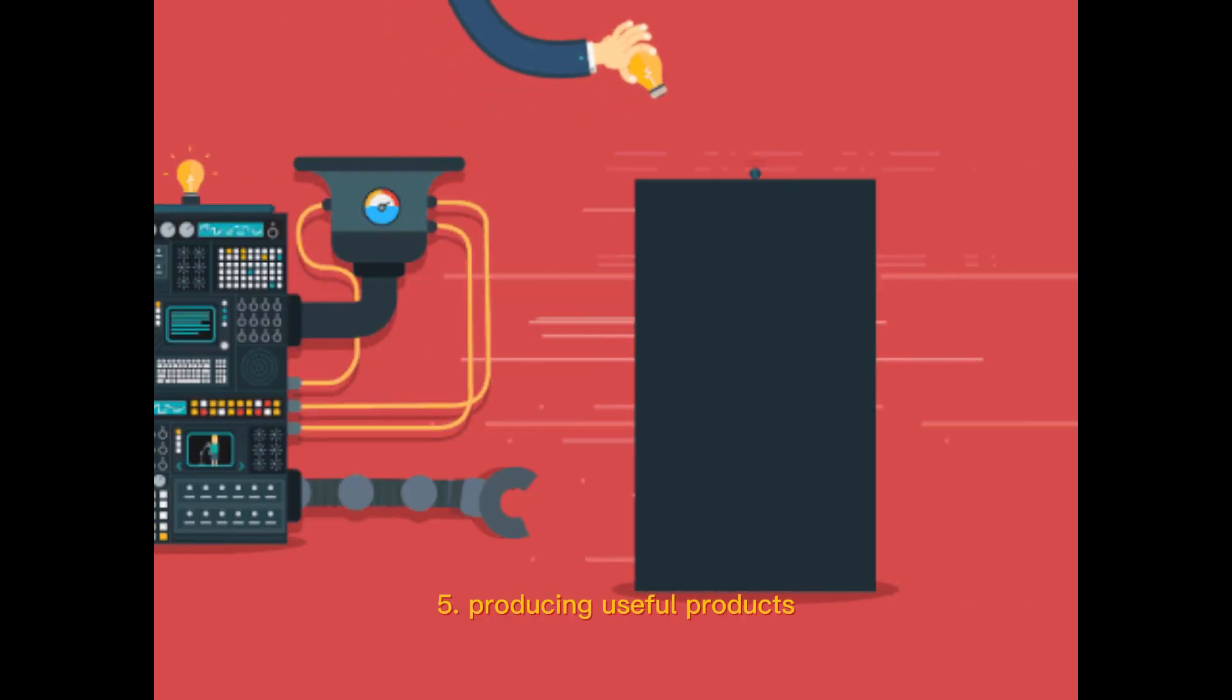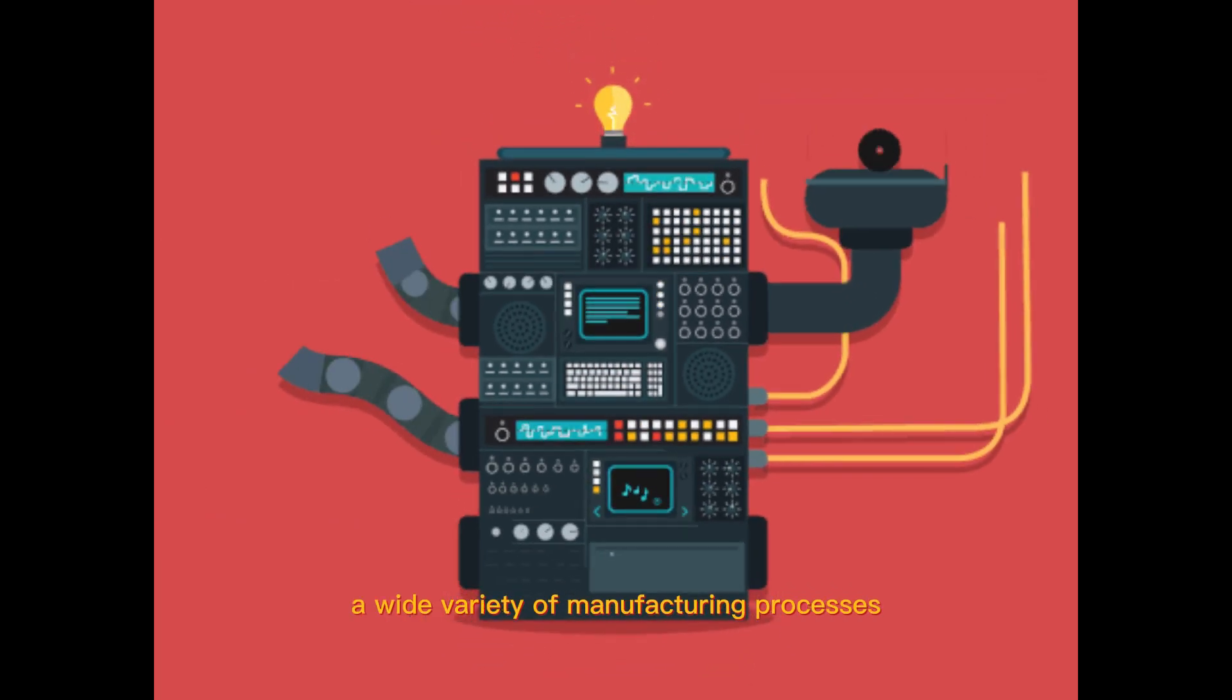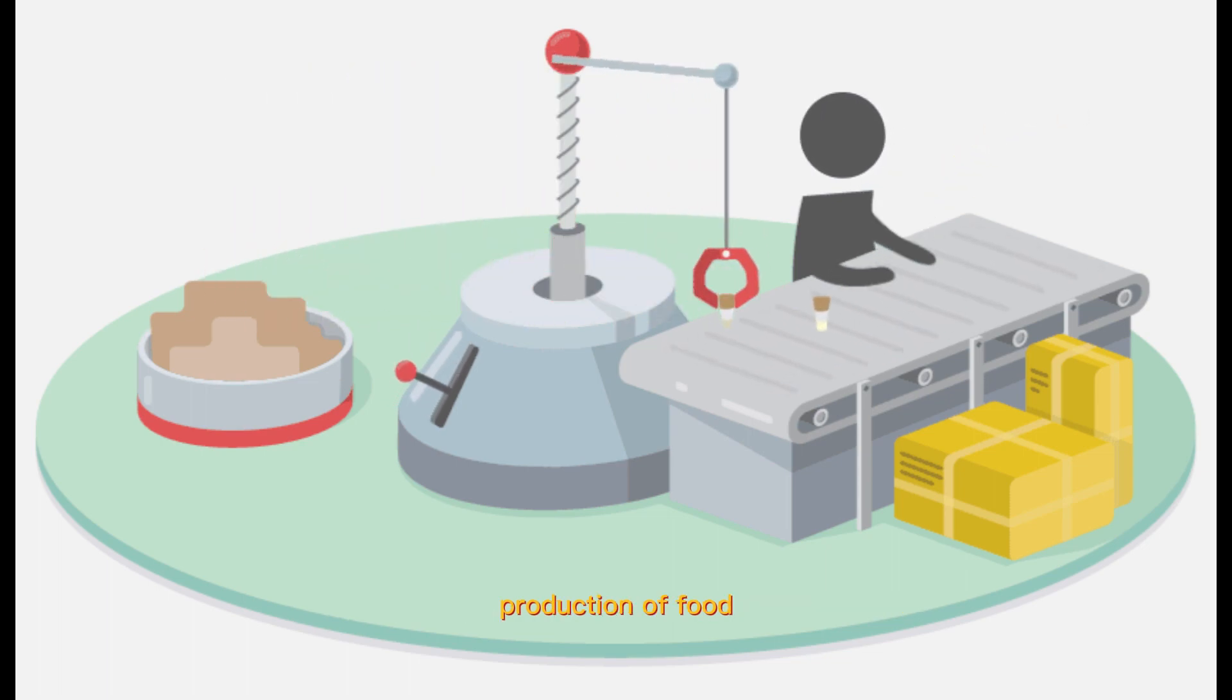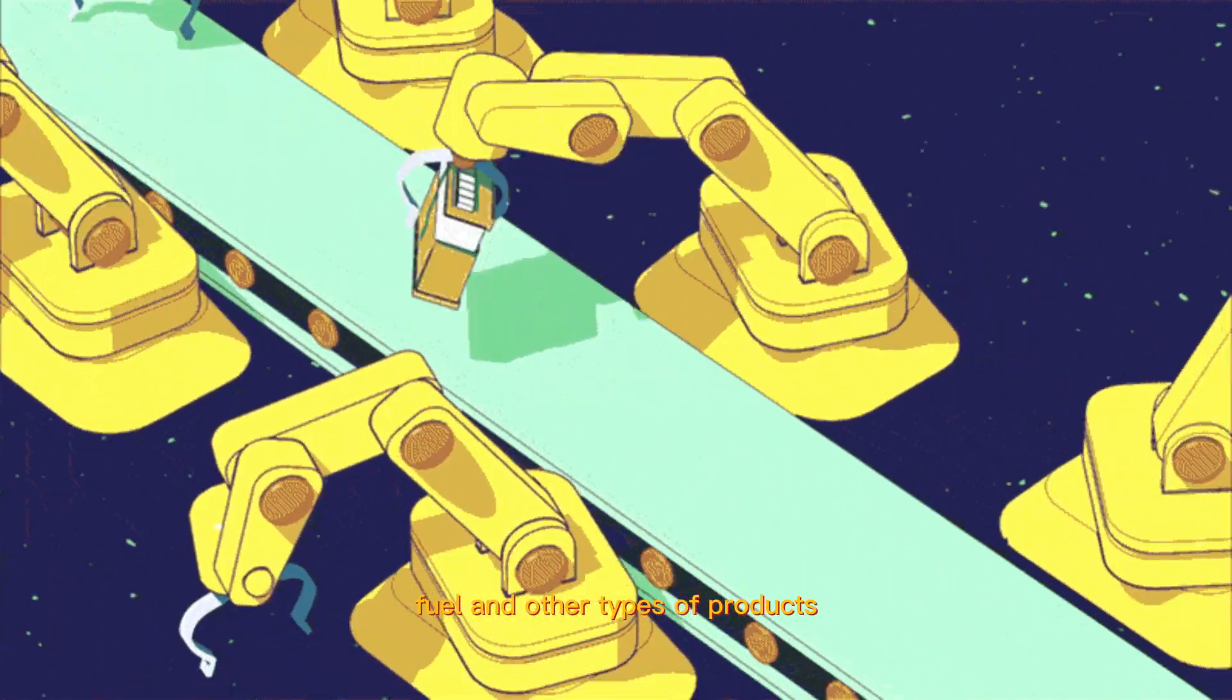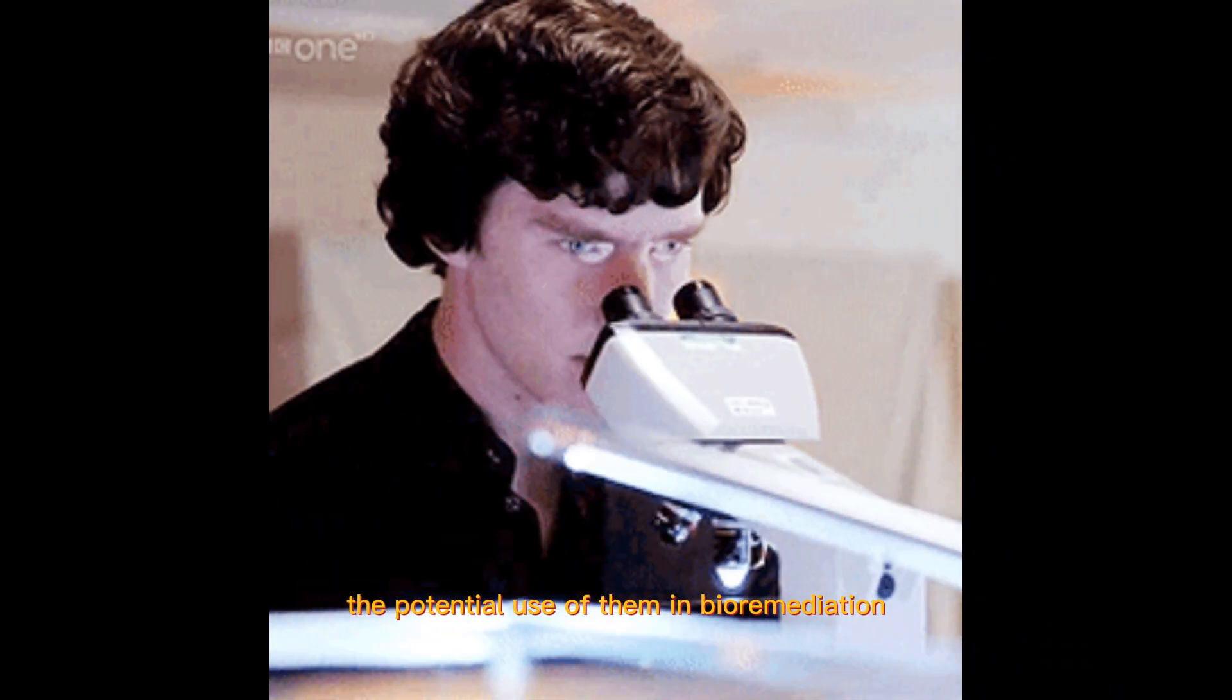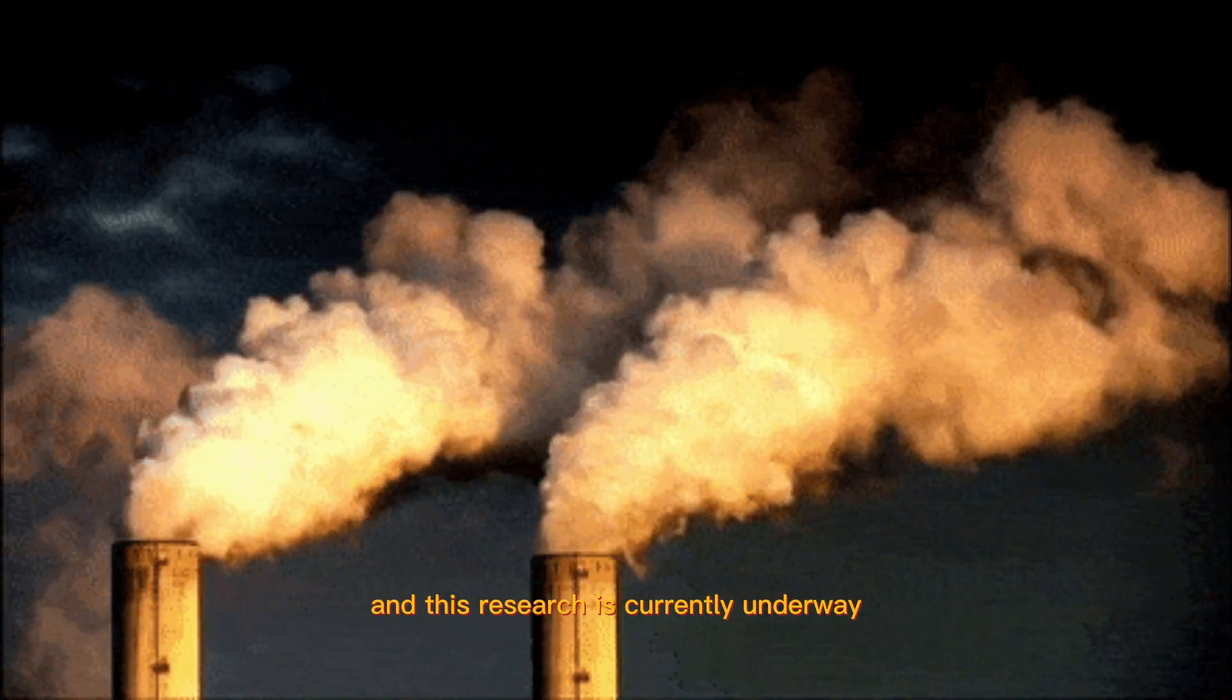5. Producing useful products. Microbes have an advantage in a wide variety of manufacturing processes, including the processes that are responsible for the production of food, fuel, and other types of products. In addition to this, research is being done to investigate the potential use of them in bioremediation and pollution control, and this research is currently underway.